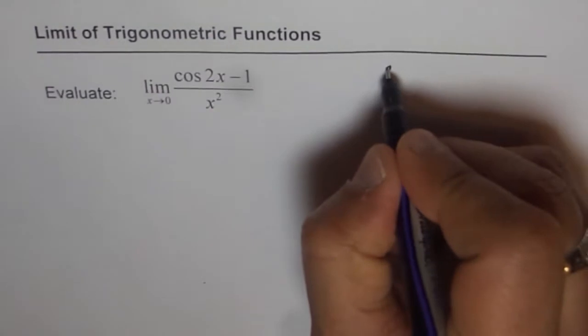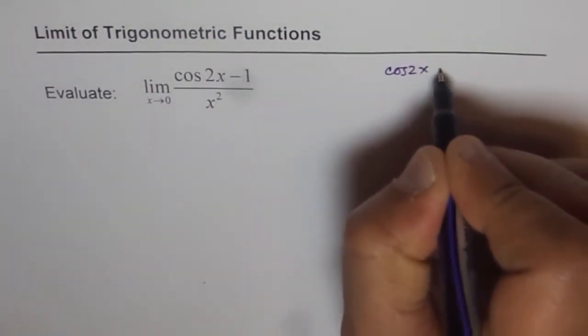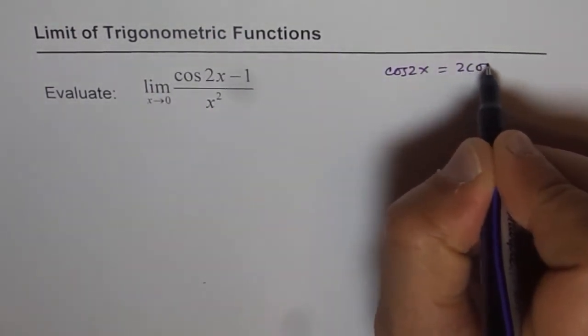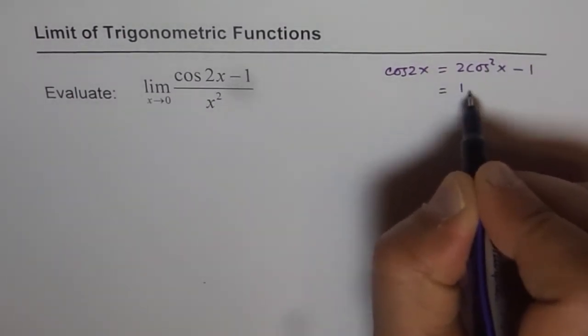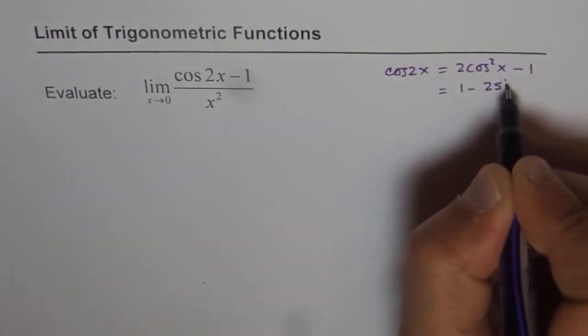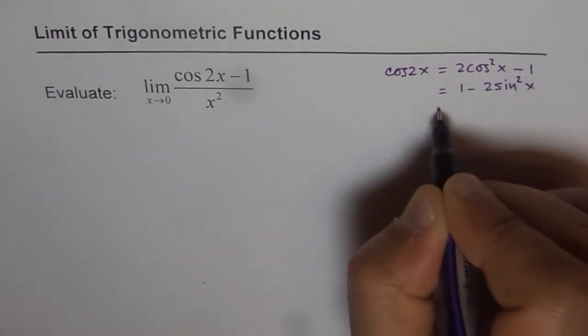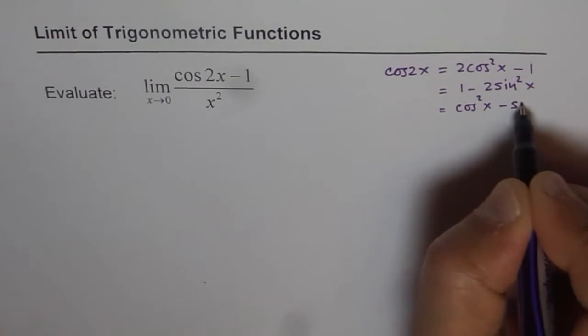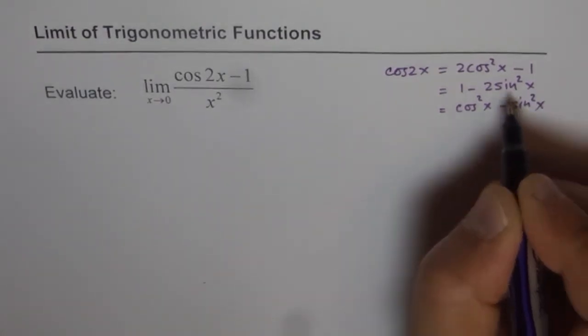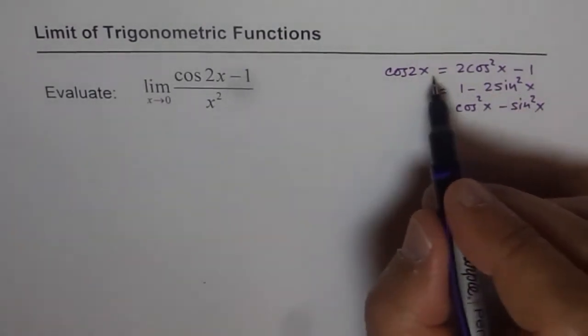cos 2x is equals to 2 cos squared x minus 1. It is also equals to 1 minus 2 sin squared x. And we have one more formula for this, which is cos squared x minus sin squared x. So these are the three formulas which can be used with cos 2x.